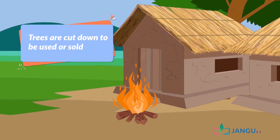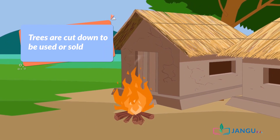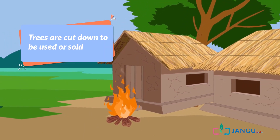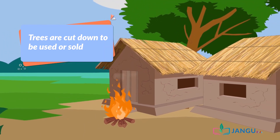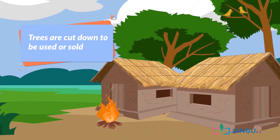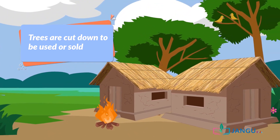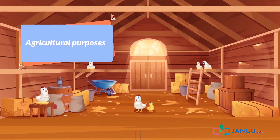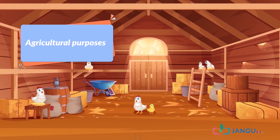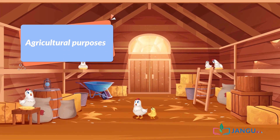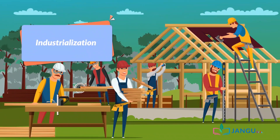Trees are cut down to be used or sold as fuel or firewood, sometimes in the form of charcoal or timber. Other reasons include agricultural purposes such as ranches or pasture for livestock and planting of crops, as well as industrialization.